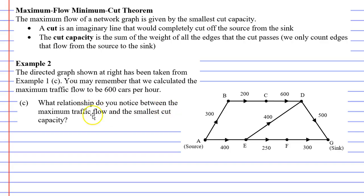What relationship do you notice between the maximum traffic flow and the smallest cut capacity? And the relationship we see is that they are the same. And that is why this is called the maximum flow minimum cut theorem. When you find the minimum cut, which in this case was 600, then you have found the maximum flow for the network diagram. In this case, 600 cars per hour. And that is why this theorem is really useful. By simply drawing lines that cut our network diagram in two that separate the source from the sink, we can find the maximum flow for a diagram.